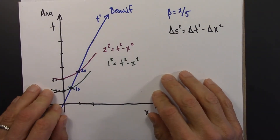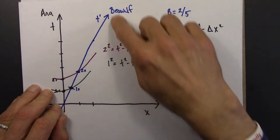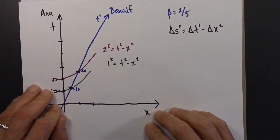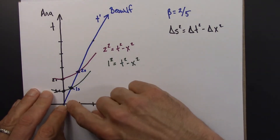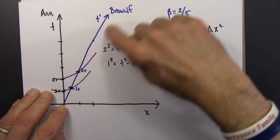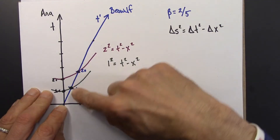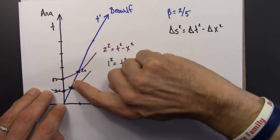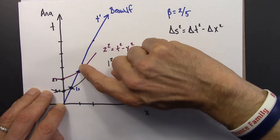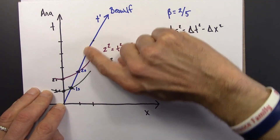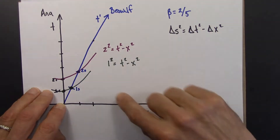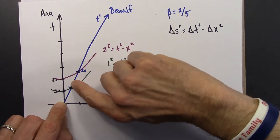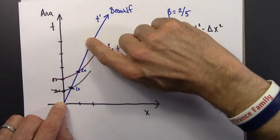We've seen how to construct the t' axis on a two-observer diagram. We've seen the angle that we need to draw it at — it's a slope of 1 over beta. And we've seen how to calibrate the spacing on the t' axis, and we do so with the use of that gamma factor that we derived.